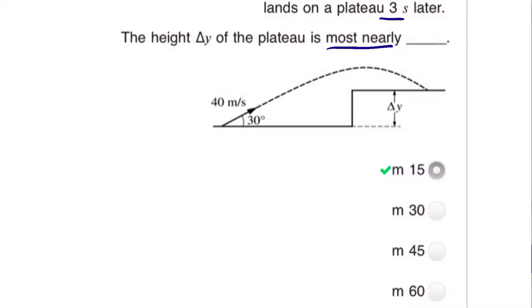This means that this is our vi, and it is launched at an angle of 30 degrees with respect to the horizontal. It takes three seconds for the projectile to reach the plateau, and we need to solve for this height right here.